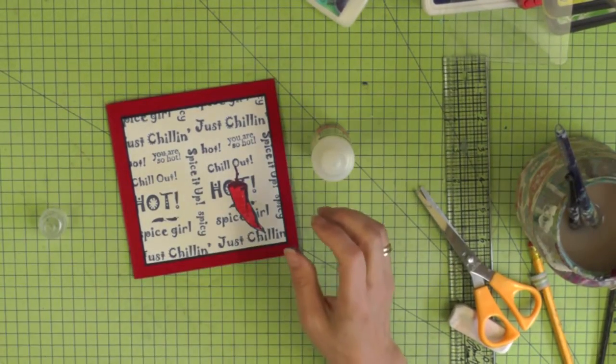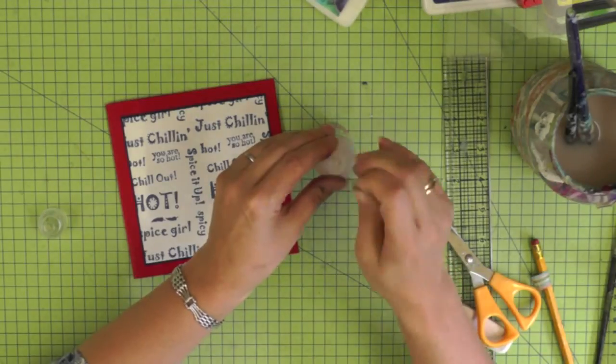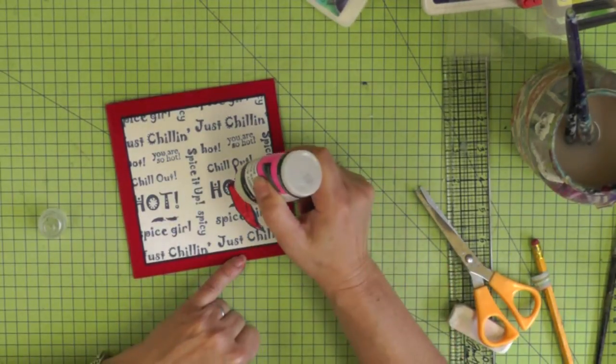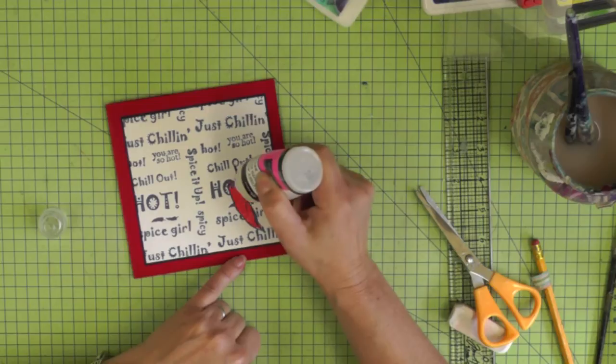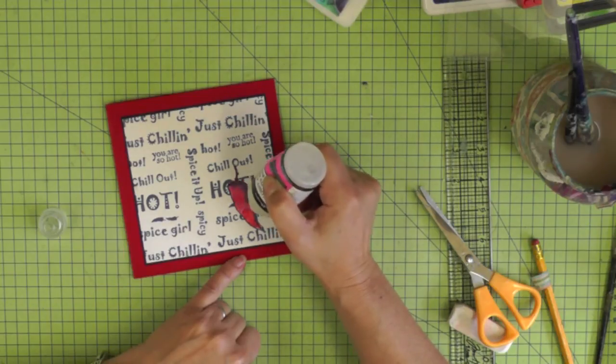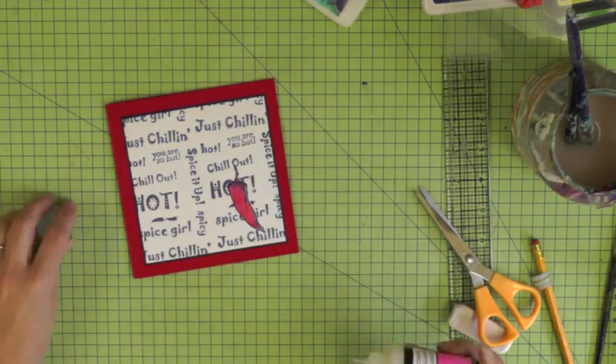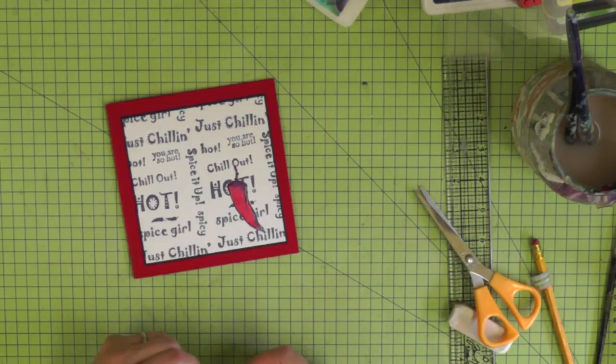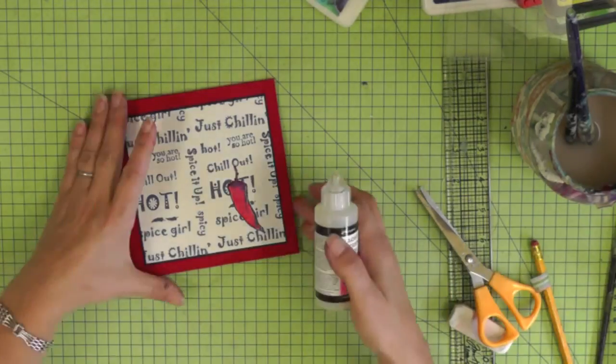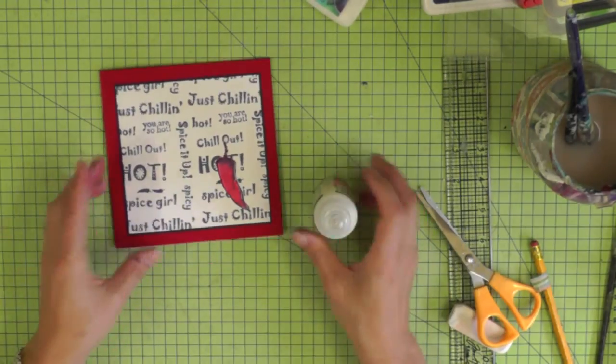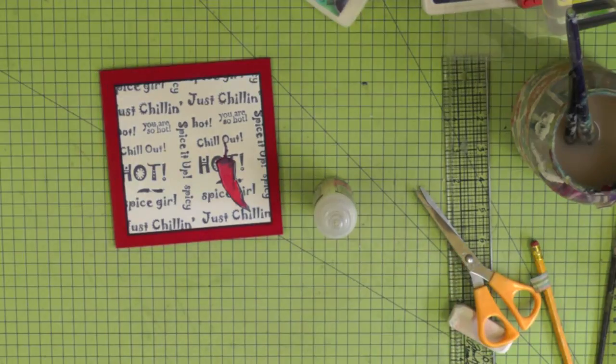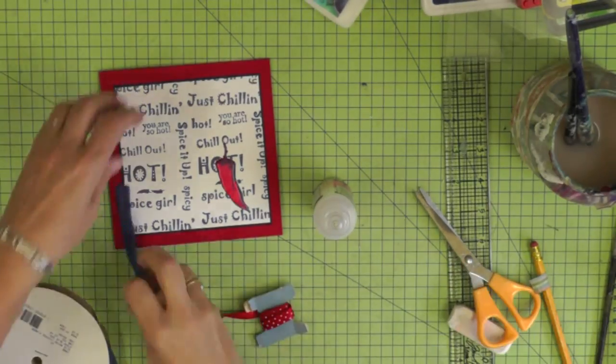Now it's time to just emphasize that lovely chili pepper even more by giving it a generous coating of glossy accents. For anyone that doesn't know, glossy accents is a kind of varnish. It dries raised and it dries very shiny, a bit like glass and it is a lovely finishing touch over a stamped image. I've just flooded the image with glossy accents and once that's dry I'll do the same on the little chili pepper that's in the middle of the card.